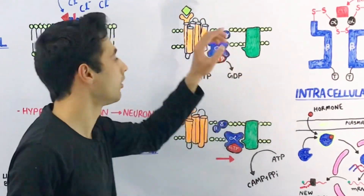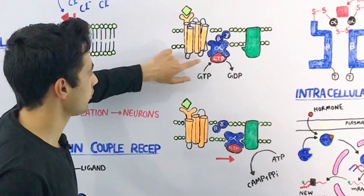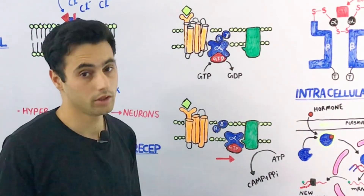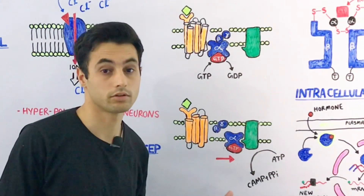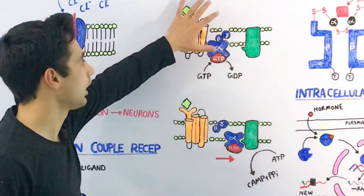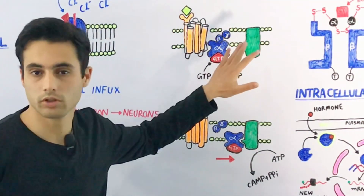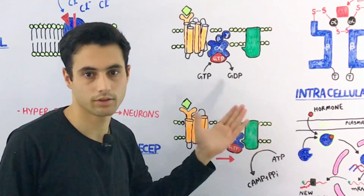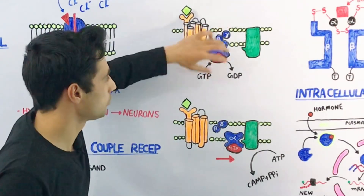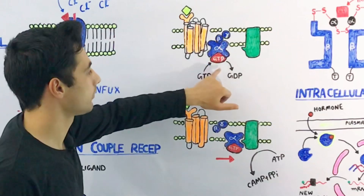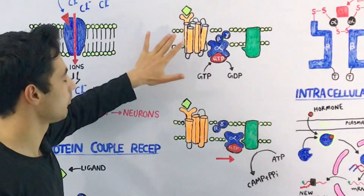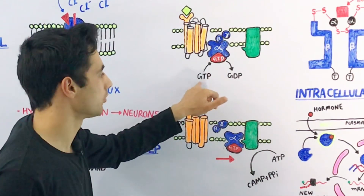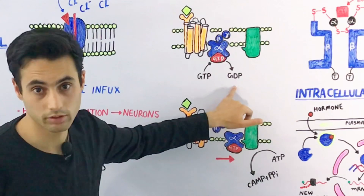When the ligand binds with the extracellular portion of this G-protein coupled receptor, the intracellular portion will interact with this G-protein. There are three types of G-protein: Gi (G inhibitory), Gs (G stimulatory), and Gq. The ligand binds with the receptor and depending on which is activated, let's assume the G stimulatory protein is activated. The GDP on the alpha subunit is then replaced by GTP — guanosine triphosphate.